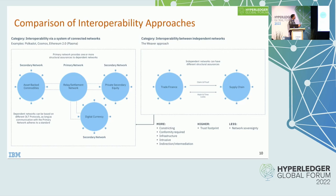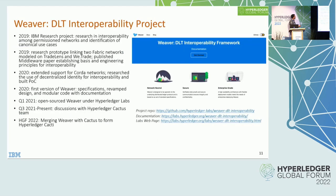This kind of solution works if all networks are already open public networks, but for private networks it seemed to us like a suboptimal solution. The challenge we set out to solve was: how do you enable private networks to interoperate without having to surrender their sovereignty to another network or compromise privacy? What we can do with Weaver is allow two networks to directly interact with each other without any settlement network in the middle.